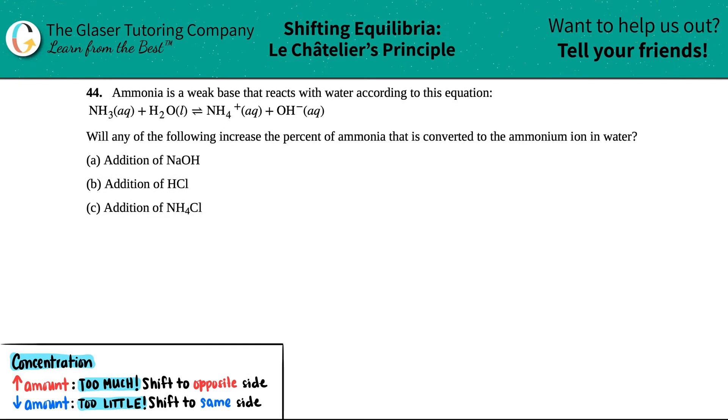Ammonia is a weak base that reacts with water according to this equation. Will any of the following increase the percent of ammonia that is converted to the ammonium ion in water? Then they give us three different scenarios here.